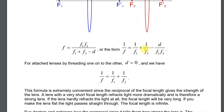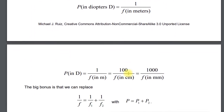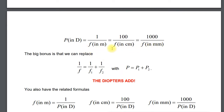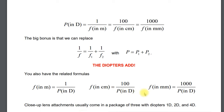The formula with the D we'd go ahead and give you, so you wouldn't need to worry about that. But you should know the simpler one — diopters add when two lenses are placed together with no distance between them. Know the definition of diopters and the three versions for easy conversion.